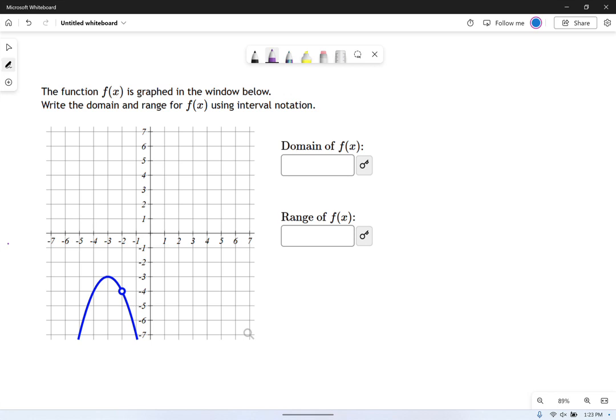Two important vocabulary words when you're describing the key features of functions, graphed functions anyway, are domain and range.